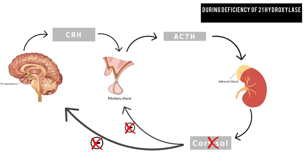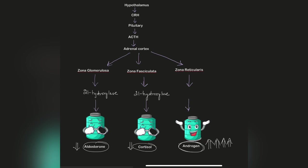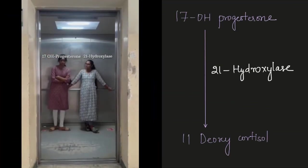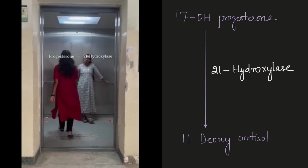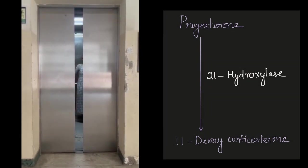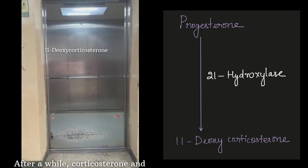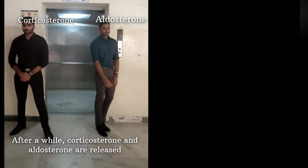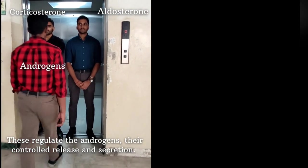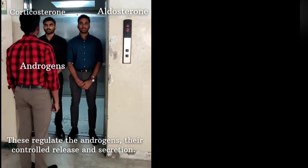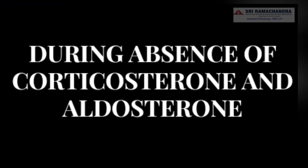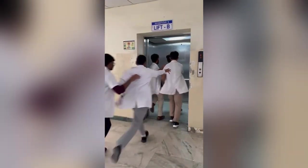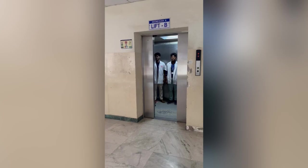In the deficiency of 21-hydroxylase, cortisol and aldosterone production are less and androgen production will be more. The 21-hydroxylase enzyme converts 17-hydroxyprogesterone into 11-deoxycortisol, and also helps in the conversion of progesterone into 11-deoxycorticosterone. In the absence of corticosterone and aldosterone due to deficiency of 21-hydroxylase, androgen levels increase and hence lead to the syndrome.